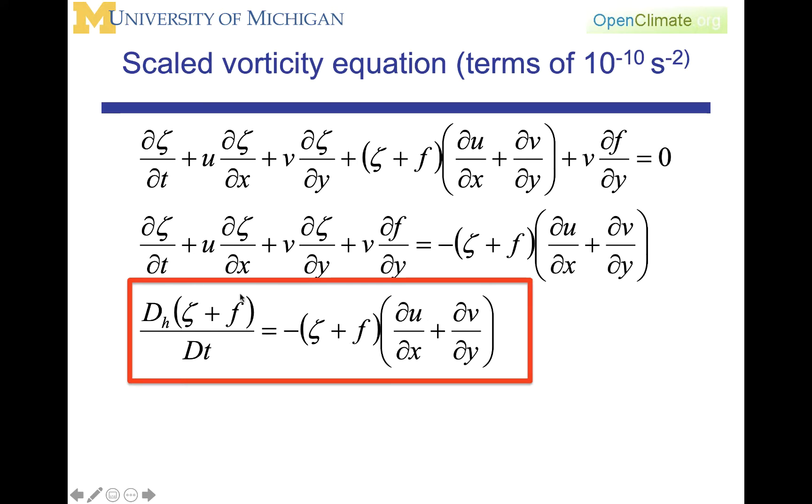is equal to the relative plus planetary vorticity times the divergence of the horizontal wind field. So this relates the time rate of change, including the advection, to the divergence of the total vorticity. And again, we're talking about the k-component or the rotation around the local vertical axis in our tangential coordinate system.